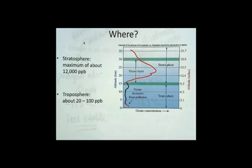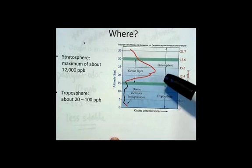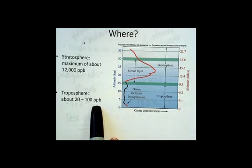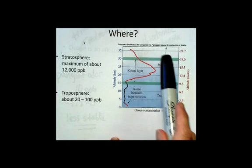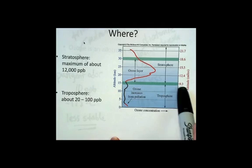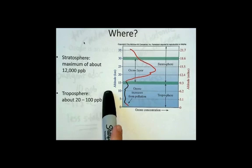In the troposphere, the concentrations are lower than in the stratosphere. And this graph is showing us the varying concentrations of ozone with altitude. This side is in miles, and this side is in kilometers.